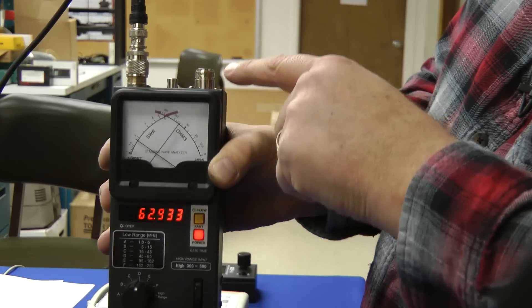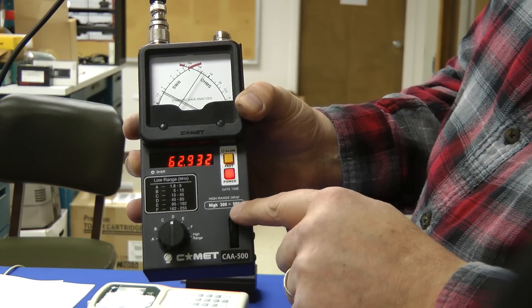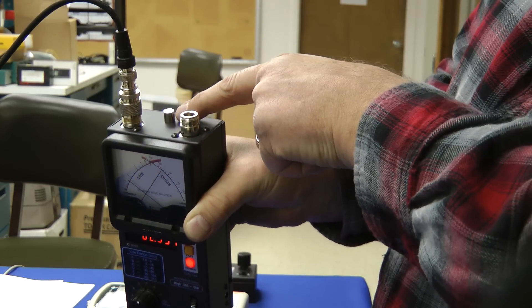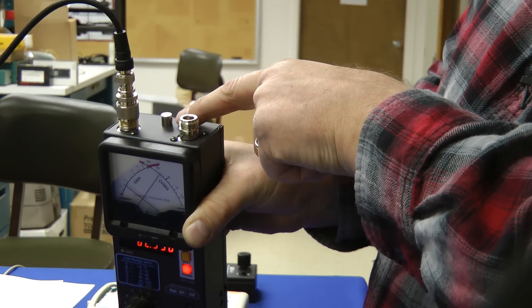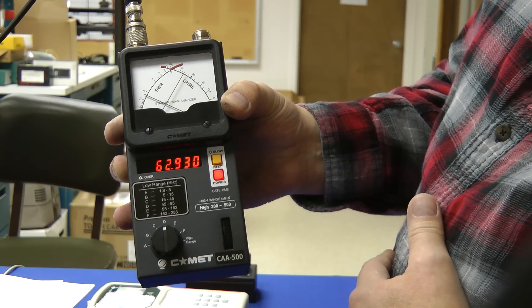Now on top here we have an N connector. This is for the extended range which is 300 to 500 megahertz. What I like here is this little hole. This is where you can attach a lanyard. So you can attach it to your utility belt when you're on top of the tower.